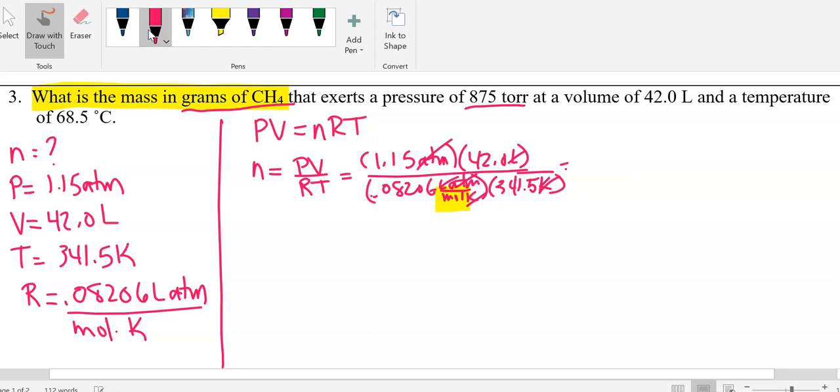Plugging it into my handy dandy calculator gives me, which I'm going to round to 3 sig figs, so that's our third sig figs, so 1.72 moles.